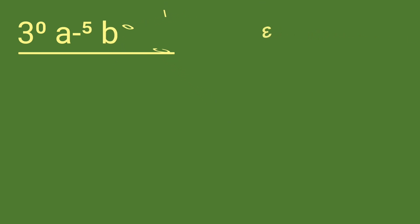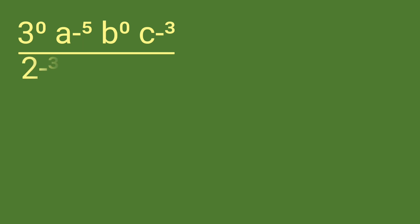For example, we have 3 raised to 0, a raised to negative 5, b raised to 0, and c raised to negative 3, divided by 2 raised to negative 3, a raised to negative 2, b, and c raised to negative 4.